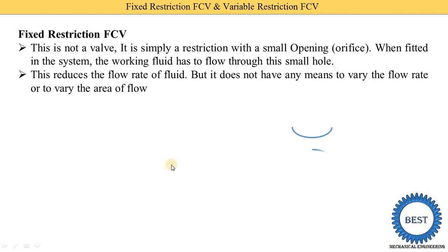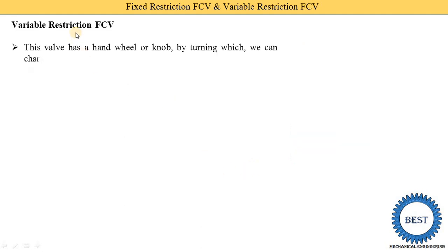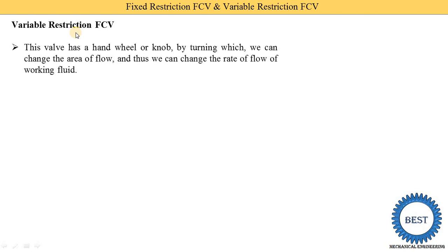Here you see this is the symbol of the fixed restriction FCV. It represents the orifice and we are not able to change this area or diameter. The second one is the variable restriction FCV. From the name, we can easily understand that we are able to change the flow rates. That is called as the variable restriction.